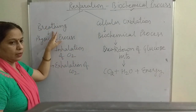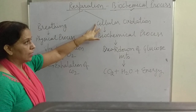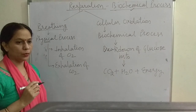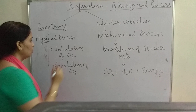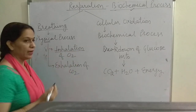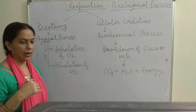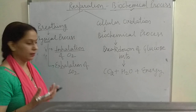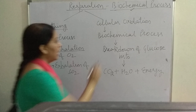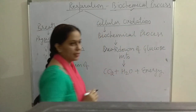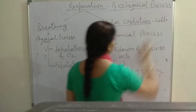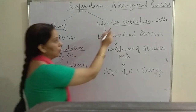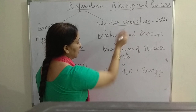Respiration involves two steps mainly: breathing and cellular oxidation. Breathing is a physical process — it only involves exchange of gases between the lungs and the atmosphere. These two processes are inhalation of oxygen, meaning when we inhale we take in oxygen that goes into our lungs, and exhalation of CO₂, meaning we release carbon dioxide from our lungs into the atmosphere. Cellular oxidation takes place in the cells of the body, and it is a biochemical process.